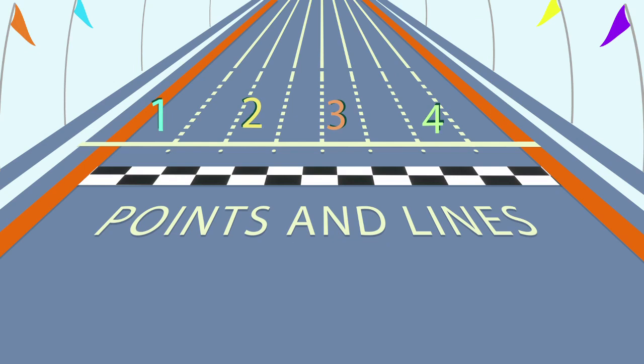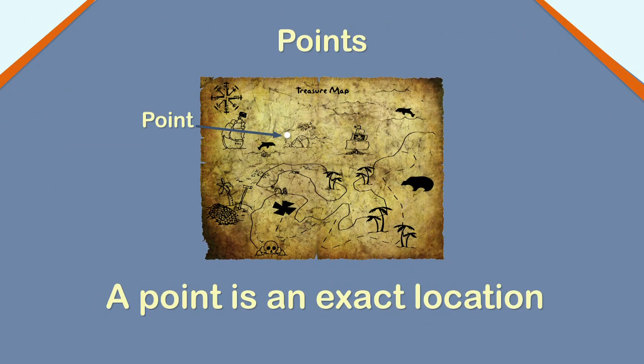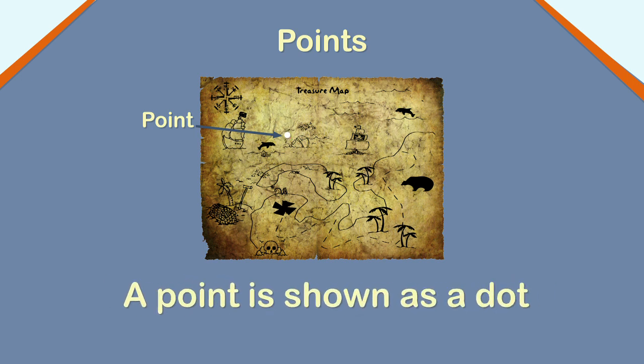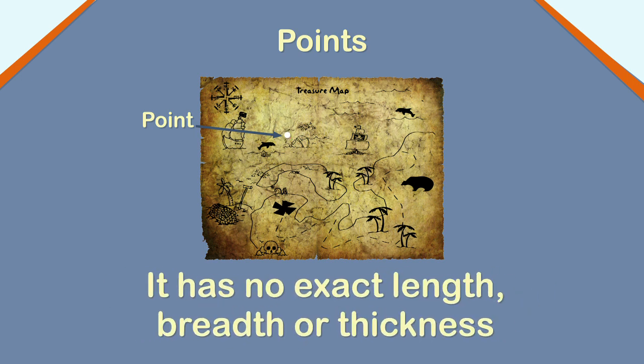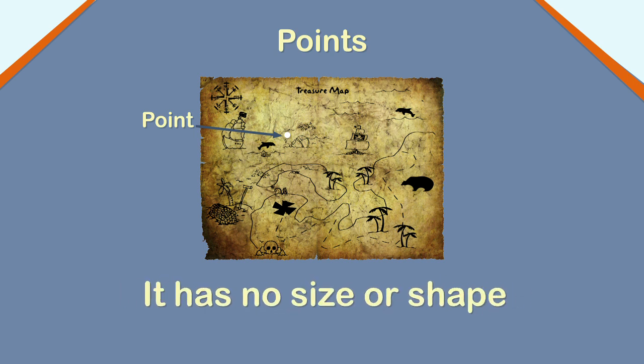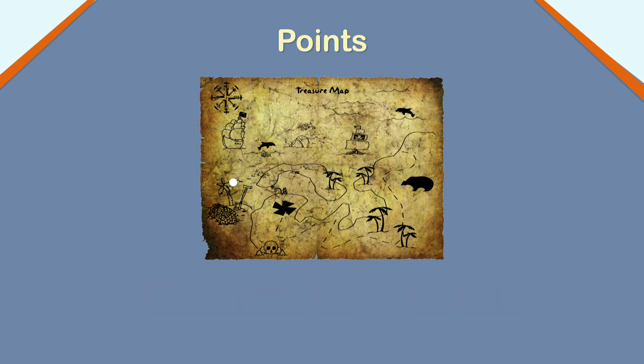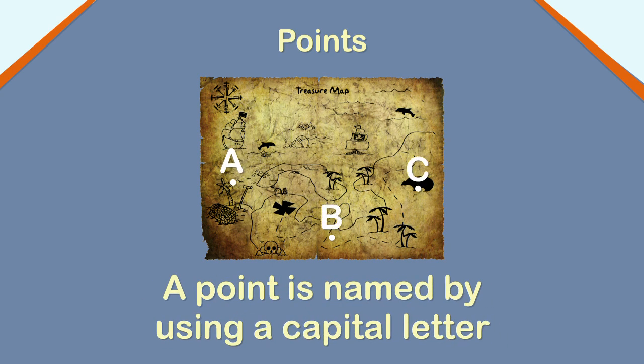A point is an exact location. In geometry, a point is shown as a dot. A point has no exact length, breadth and thickness. It has no size or shape. It is generally used to locate an exact position. A point is named by using a capital letter. Here, the three points are named A, B and C.